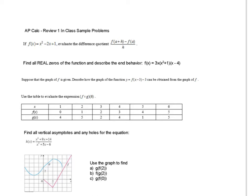Now we need to find the real zeros of this function. Finding the real zeros — we look at what makes this equation equal to zero. In this case, x equals zero works. For another term, no — it's going to be imaginary. In this case, it will be four. So those are the two values that help us find the real zeros of this function.